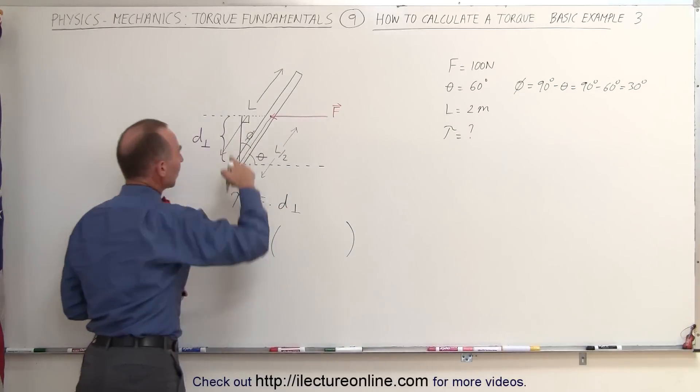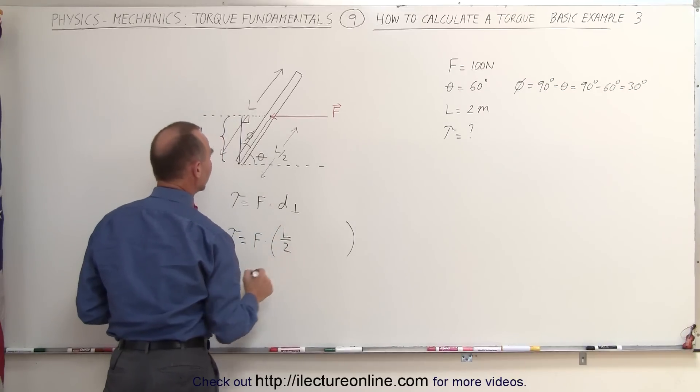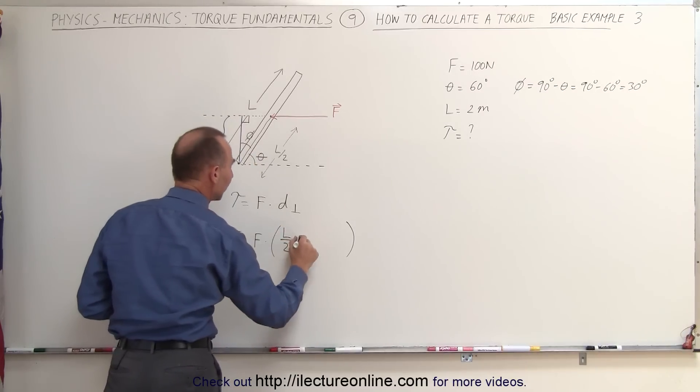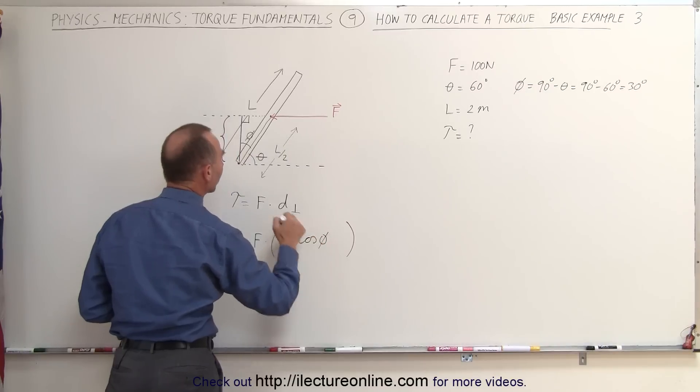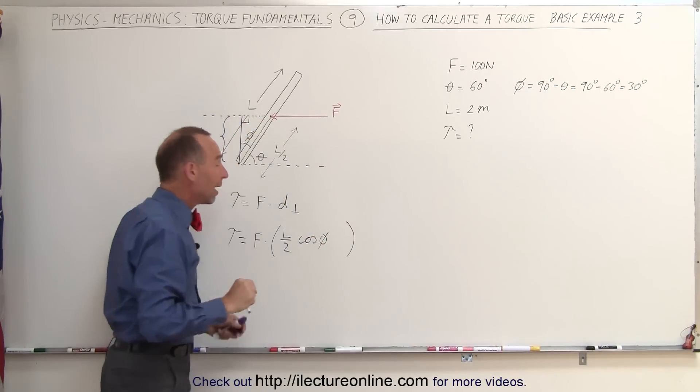And we can then find the perpendicular distance as d by taking the hypotenuse, L divided by 2 times the cosine of the angle phi. The cosine of phi because this is the adjacent side to this angle, when that's the hypotenuse. So now we can go ahead and find the torque.